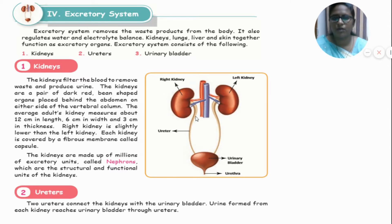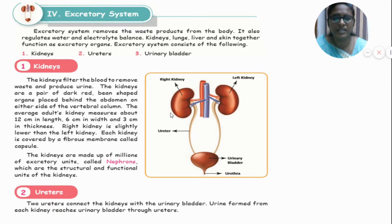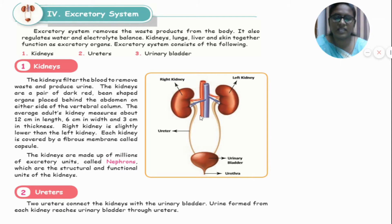We have a pair of kidneys in our body — a right kidney and a left kidney. The right kidney is slightly lower than the left kidney. The kidney size is 12 centimeters in length and 6 centimeters in width. Each kidney is covered by a fibrous membrane called the capsule. We can locate the kidney behind the abdomen on either side of the vertebral column.